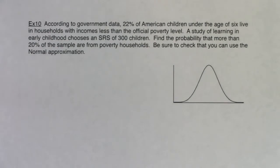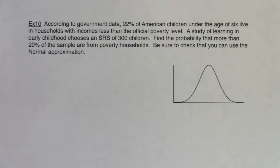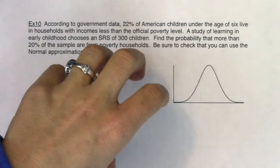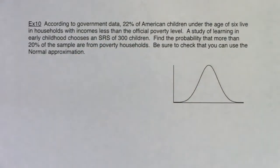All right, now that we've looked at that applet, let's do one more problem that is in proportion land, and then we're going to have a kind of a free-for-all where we'll read the problem and try to decide: are we in mean land or proportion land, and then use the rules appropriately. But this one for sure — example time — is in proportion land. No need to guess which sampling distribution we're in.